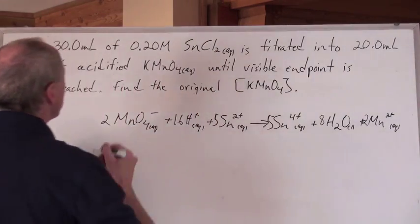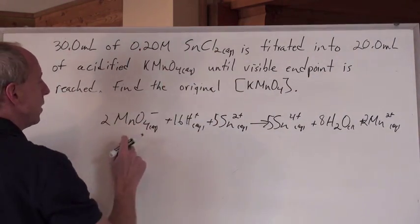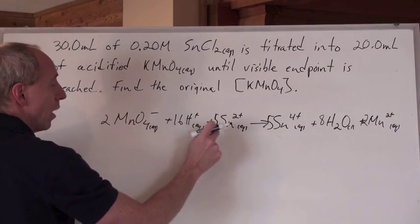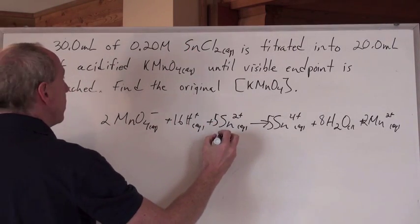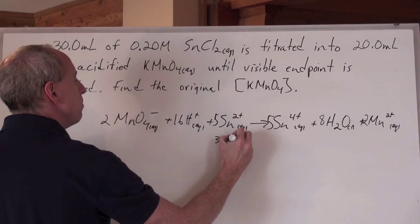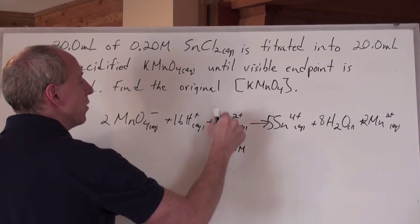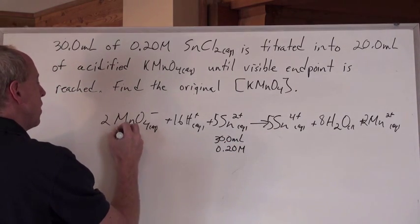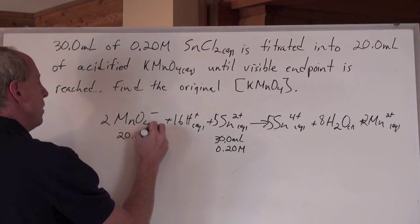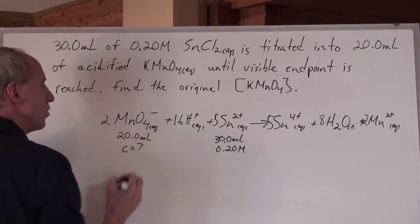We've got 30 milliliters of 0.2 mole per liter of the tin(II) chloride, which is represented by this chemical right here. That's 30.0 milliliters of that, and 0.20 moles per liter is its concentration. The volume of this that we are using is 20 milliliters, and we're asked to find the concentration here.